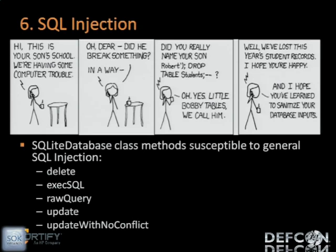Problem number six is the good old SQL injection. Basically, untrusted and unvalidated data is used to dynamically construct SQL queries, and that could lead to bad things such as deleting tables, injecting something into the database, and all sorts of other things. Again, this is not new — this vulnerability is not specific to the mobile world or Android — but unfortunately it still happens even though we've known about it for a long time. Here are some methods from the SQLiteDatabase class in the Google SDK that are susceptible to regular SQL injection and you should be aware of.